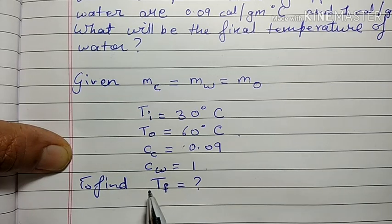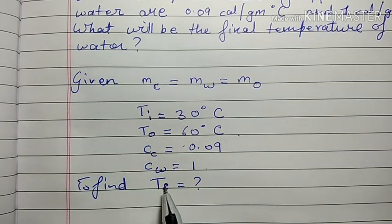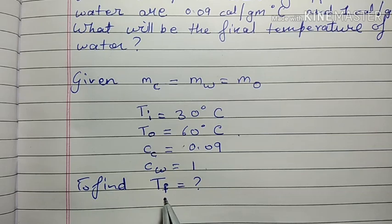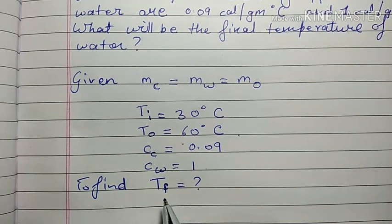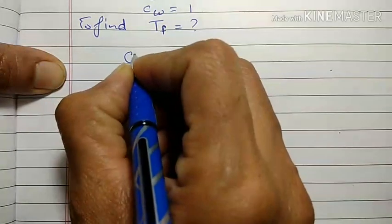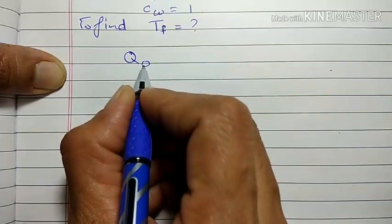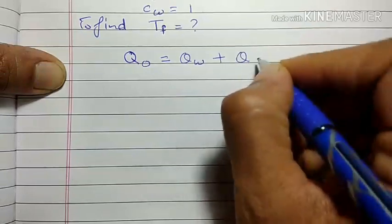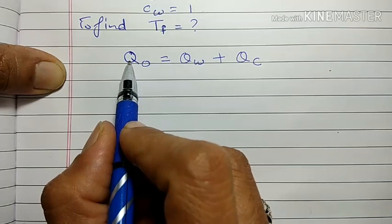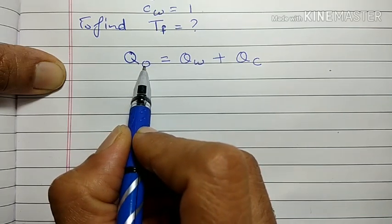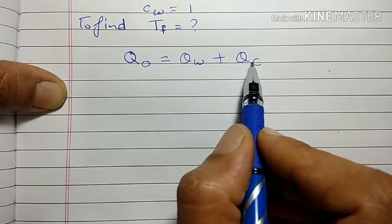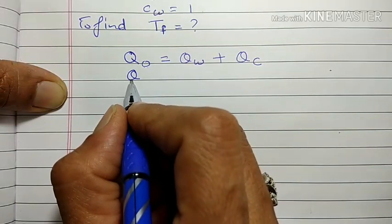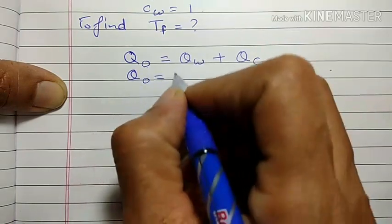We write tf rather than tw because once the final temperature of the water is reached, the temperature of the copper object and the calorimeter will also be the same — heat transfer continues until all objects reach the same final temperature. The formula for heat transfer in a calorimeter is: heat lost by the object equals heat gained by the water plus heat gained by the calorimeter.